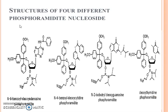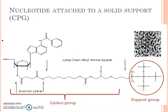Here you can see four different structures of phosphoramidite monomers: the first one is of adenosine, the second one is of cytosine, the third one is of guanine, and the fourth one is of thymine. The phosphoramidite monomer is attached to the support group with the help of a linker group. This support group can be of two types: polystyrene or CPG, which stands for controlled pore glass.